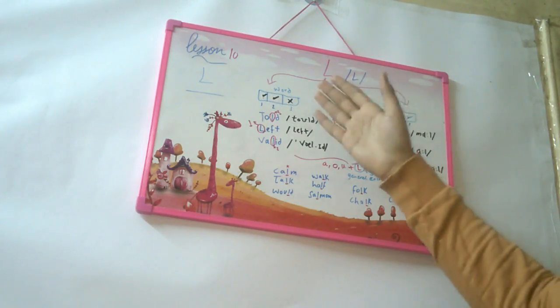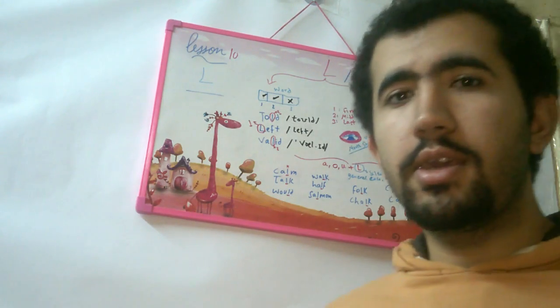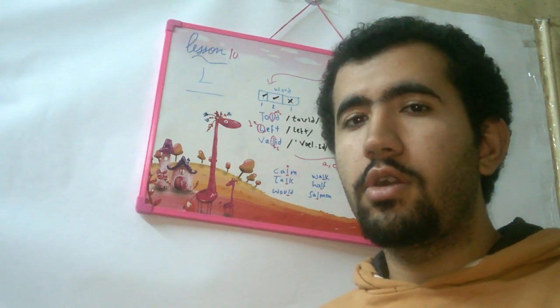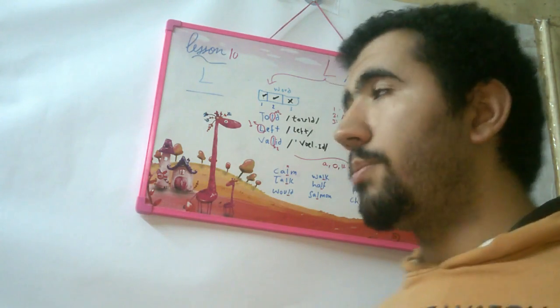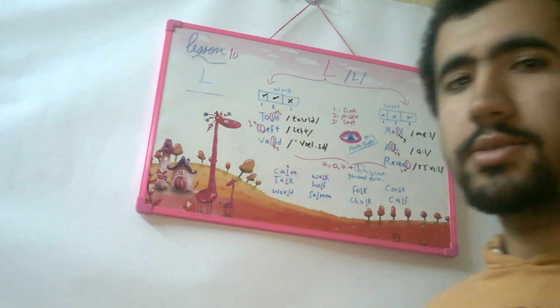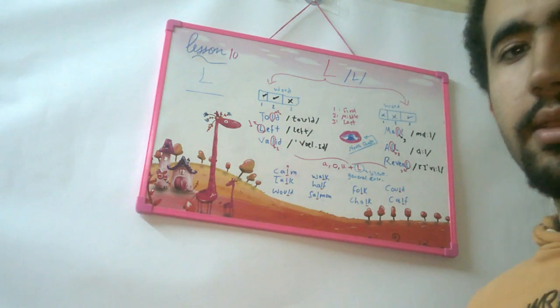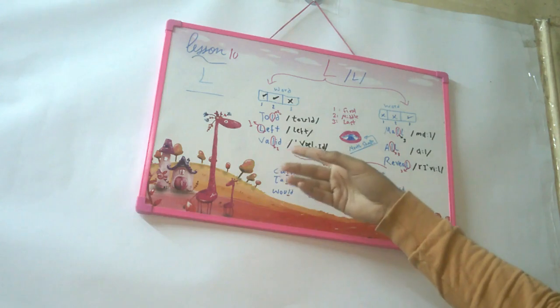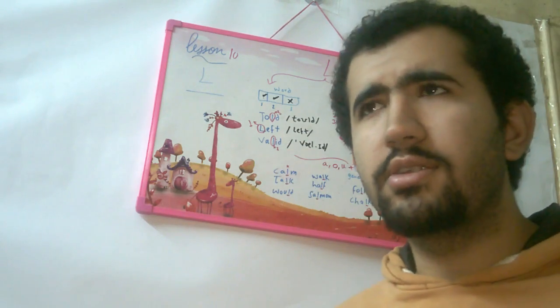We have two or three positions: either the L in the first, the middle, or the last of the word. The first or second position have the same pronunciation - light L. For example, told, left, and valid. The L is soft here, it's not heavy.